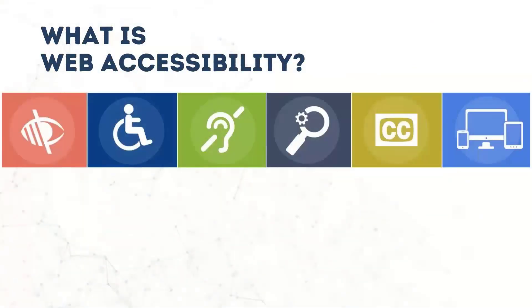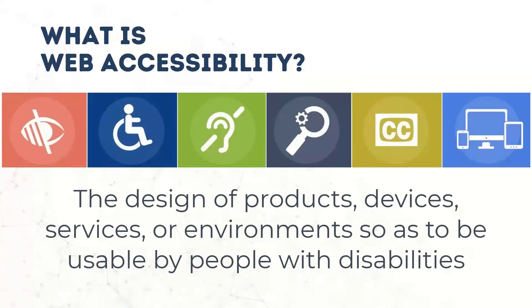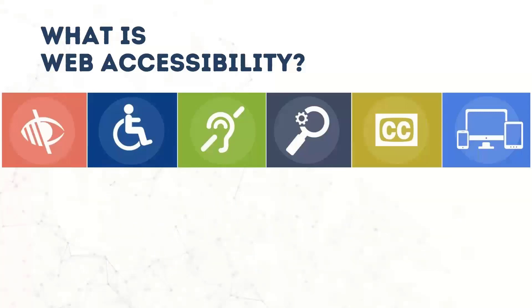Wikipedia defines accessibility as the design of products, devices, services, or environments so as to be usable by people with disabilities. The goal of web accessibility is then to provide people — in our case students — with the opportunity to access the information and features found on the Internet and especially in our courses. Accessibility is an important aspect of our course development and teaching process because it provides all of our students equal access and opportunities.